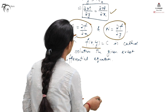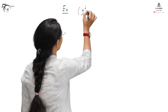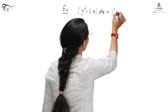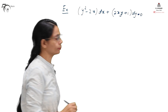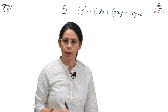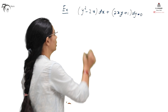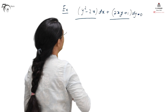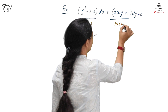We will make this more clear by taking one example. Let the differential equation be (y² − 2x) dx + (2xy + 1) dy = 0. Comparing with the standard form, M(x,y) = y² − 2x and N(x,y) = 2xy + 1.